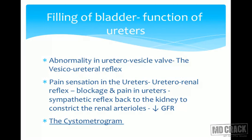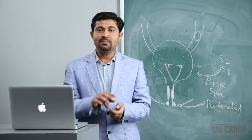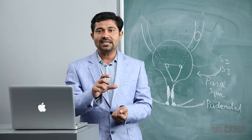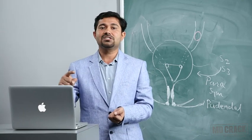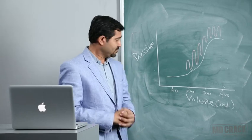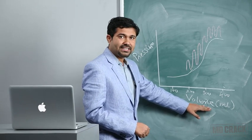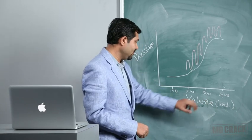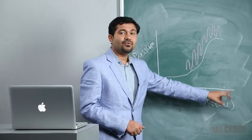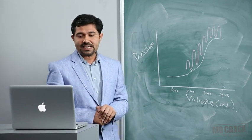Next, we understand the cystometrogram — a chart showing pressure versus volume as the bladder fills up. On the x-axis is the volume of urine collected in the bladder in ml (100, 200, 300, 400 — with 400 ml being the capacity), and on the y-axis is the pressure generated.